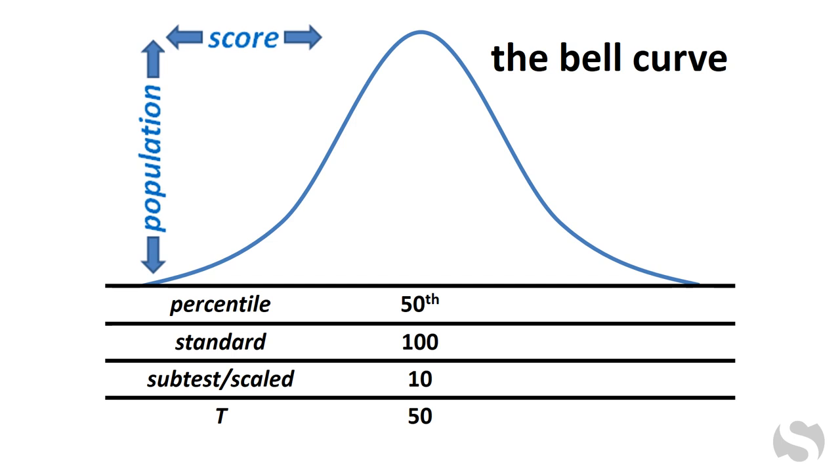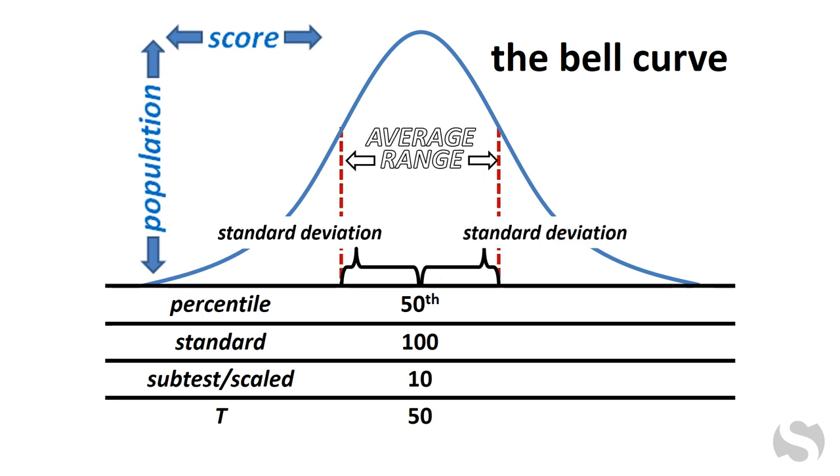A standard deviation is a set distance from the mean. One standard deviation below the mean to one standard deviation above defines the average range. Most test takers will score in this big area under the bell curve. These scores define the lower edge of the average range, and these scores define the upper edge.